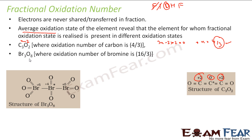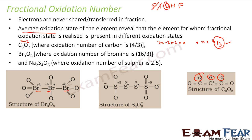One more example is Br3O8. If you find the oxidation number, it comes out to be 16/3. If you see the structure, the two bromine atoms have oxidation state of plus 6, while the one in the center has plus 4. Similarly, Na2S4O6 — the oxidation state of sulfur comes out to be 2.5. If you draw the structure, there are 2 sulfurs with oxidation state of plus 5 and 2 with oxidation state of 0, so the average comes out to be 2.5.